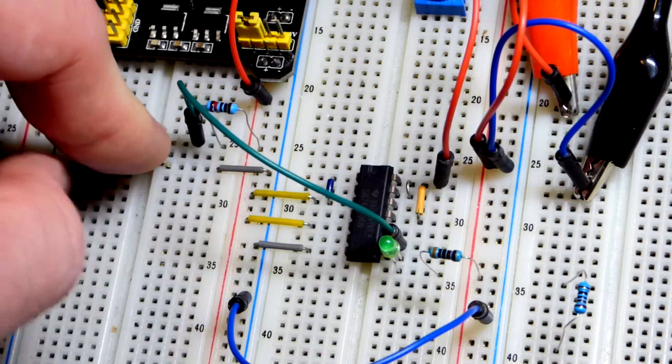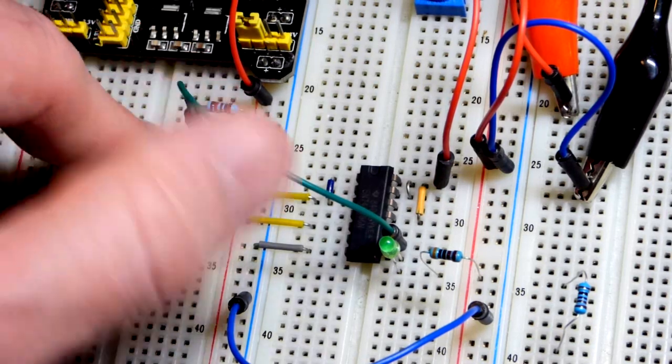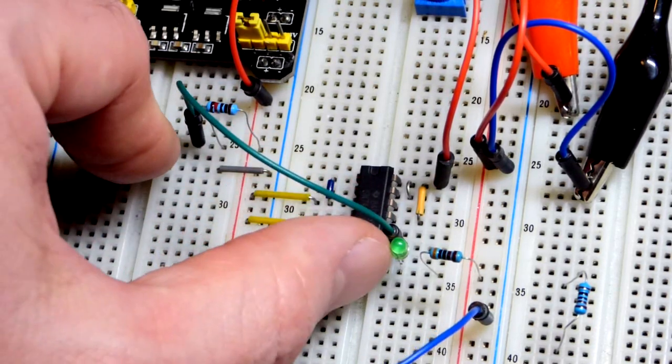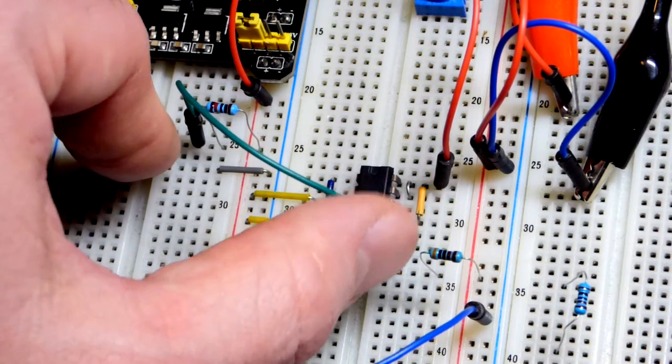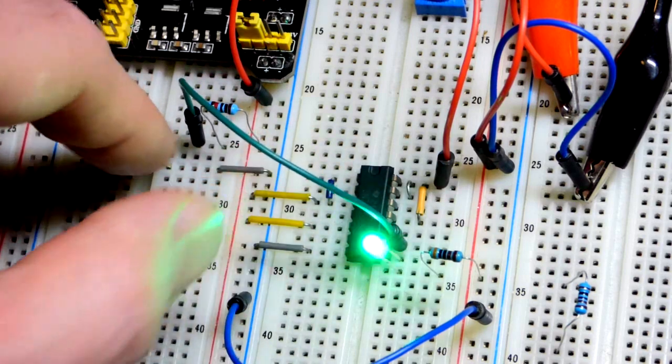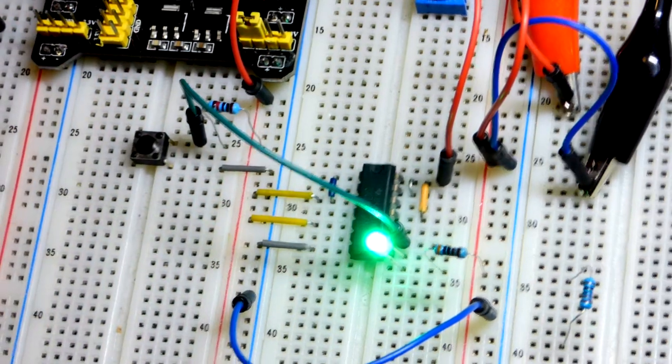So now we have a positive input and then a negative ground right there. As you can see there, we hit the button and now we have a low. There's a direct connection to ground to the input. So the output for the integrated circuit is considered high right now. And it's off. So in any case, hope that all made sense.